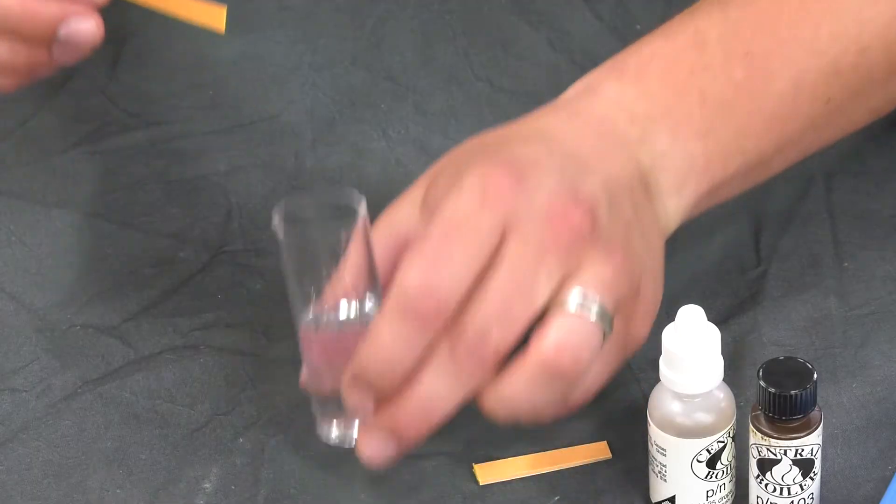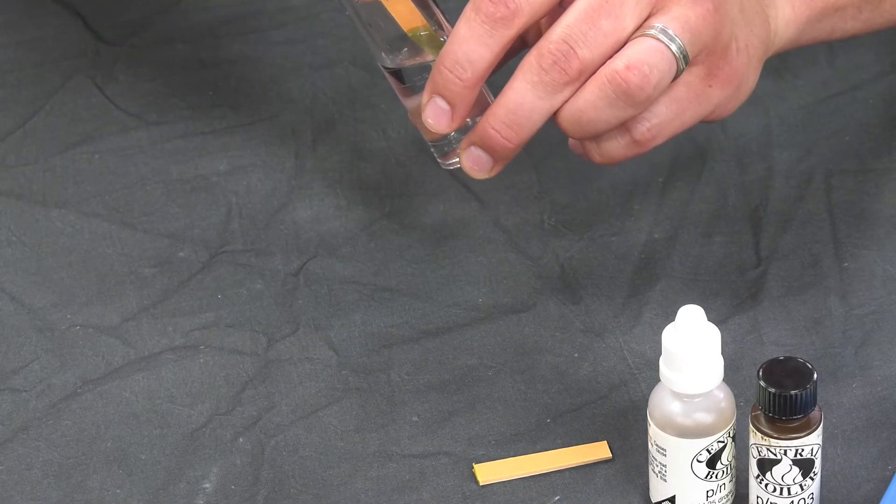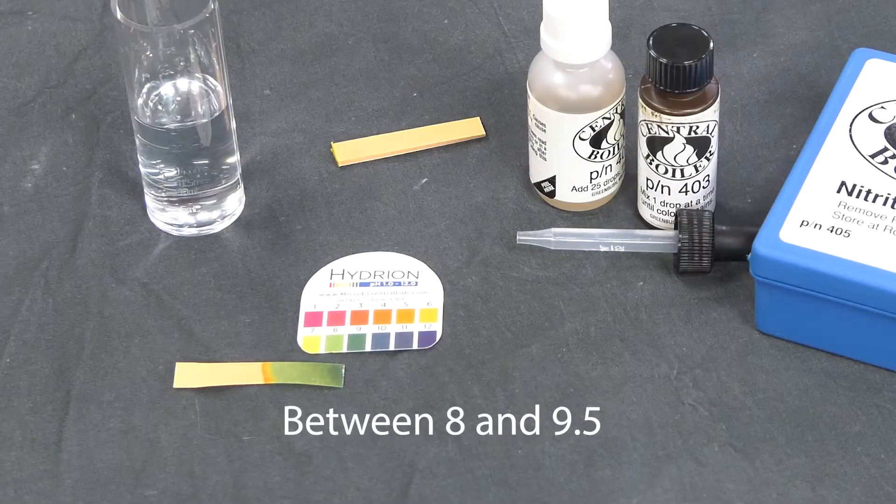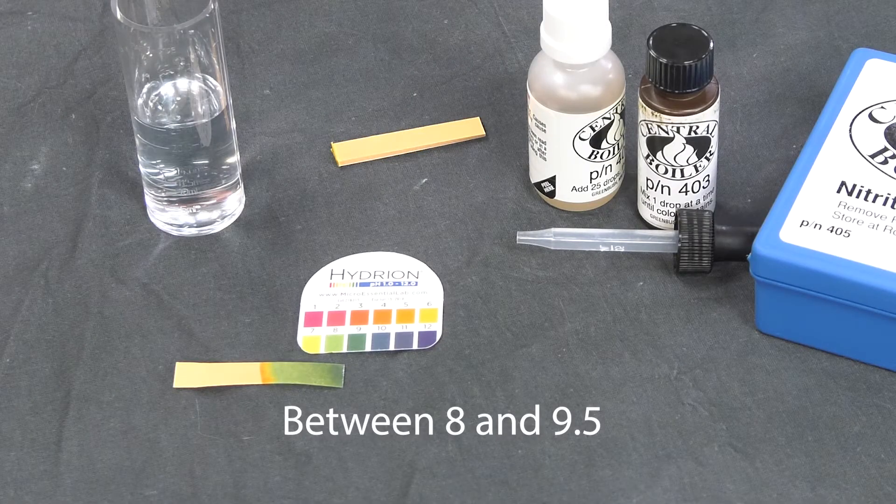Remove and dip one pH test strip into the water sample and compare the paper color to the pH color chart in the kit. The pH of the water should now be between 8 and 9.5.